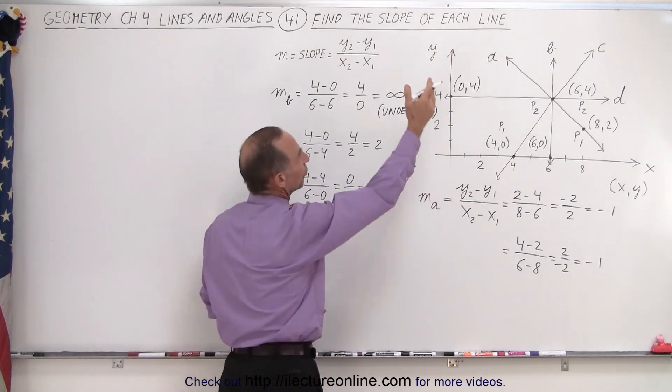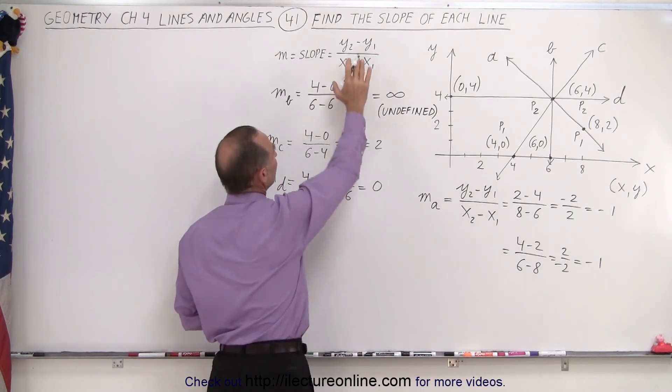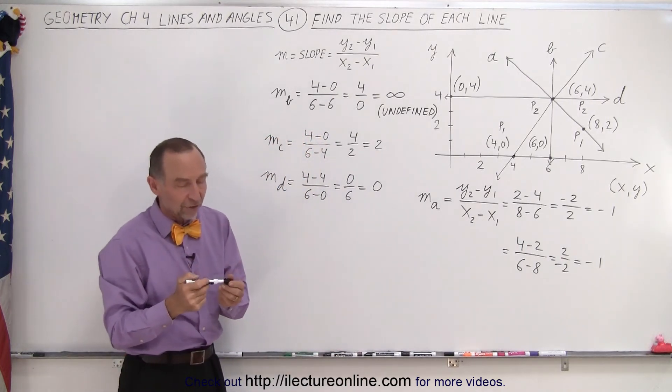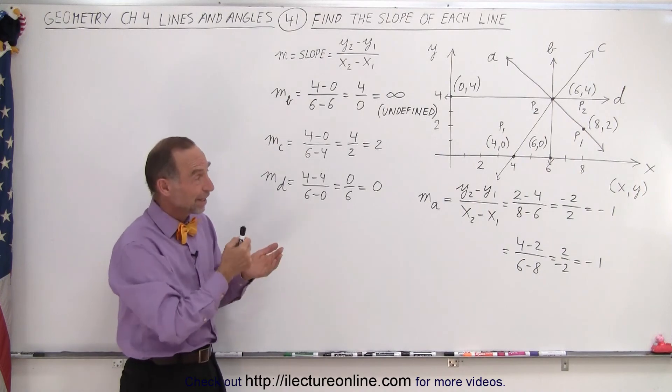Vertical lines have infinite slope or undefined slope. And for any other line, you simply take the difference between the y values and divide by the difference in the x values. It's essentially the rise over the run. And that is how it's done.